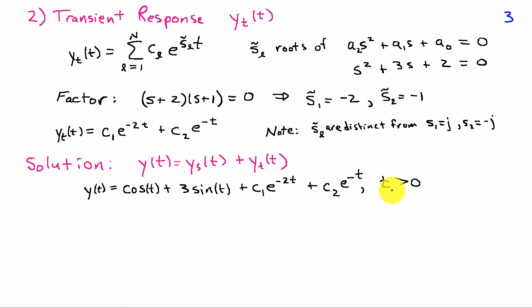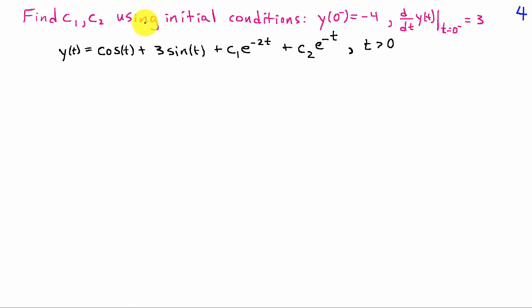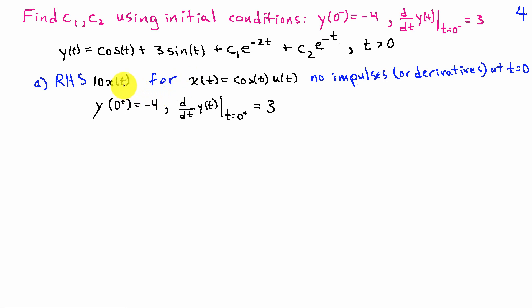The complete solution is y(t) = cos(t) + 3 sin(t) + c₁ e^(−2t) + c₂ e^(−t), valid for t > 0. We'll find c₁ and c₂ using the initial conditions y(0⁻) = −4 and y'(0⁻) = 3. Since the input cos(t)·u(t) produces no impulses on the right-hand side at t = 0, the initial conditions at t = 0⁻ equal those at t = 0⁺.